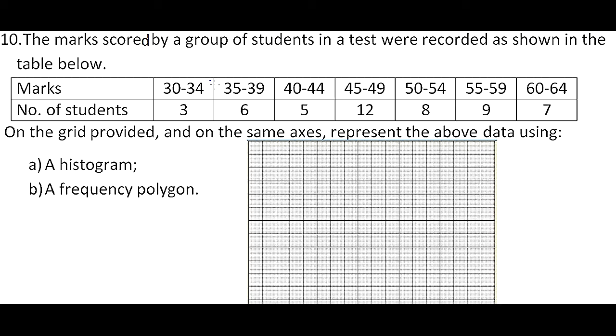Question number 10. The marks scored by a group of students in a test were recorded as shown in the table below. We have the row for marks. The marks are grouped, so for example we have those who scored between 30 and 34, there were 3.